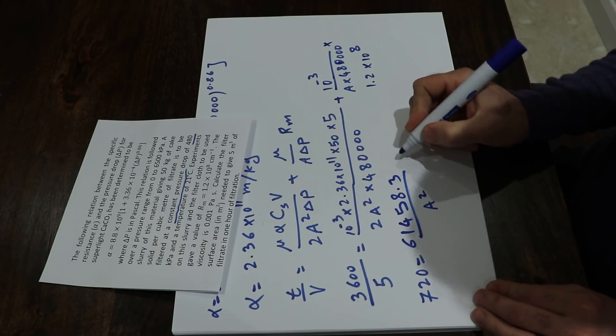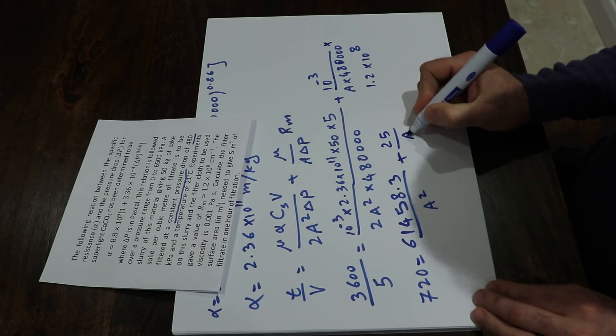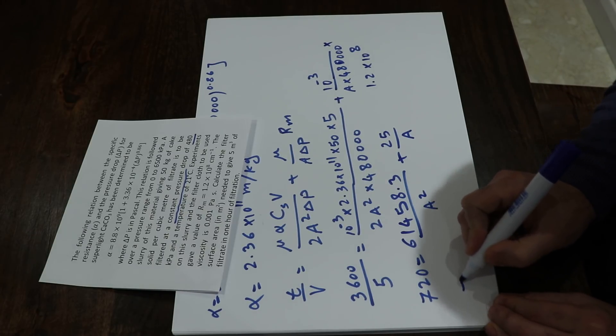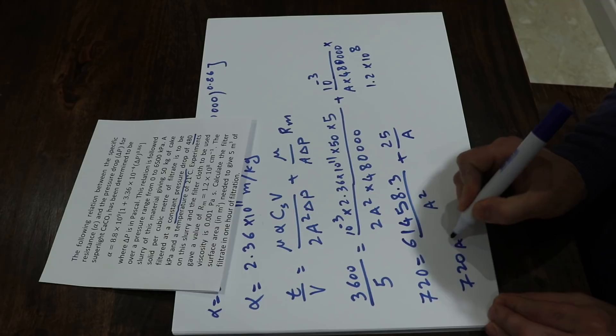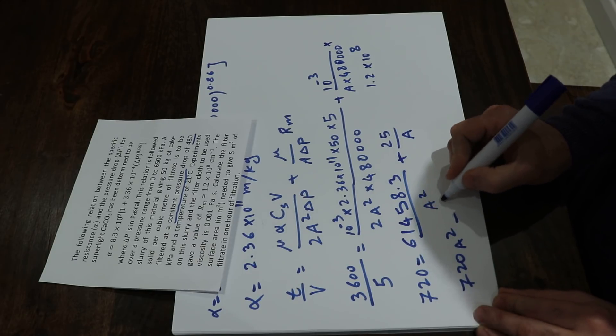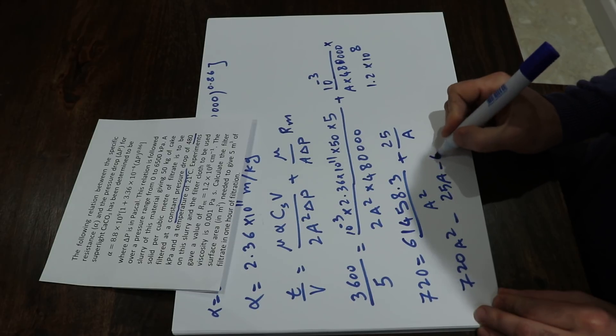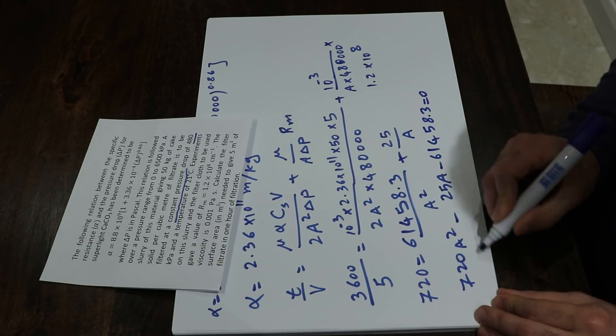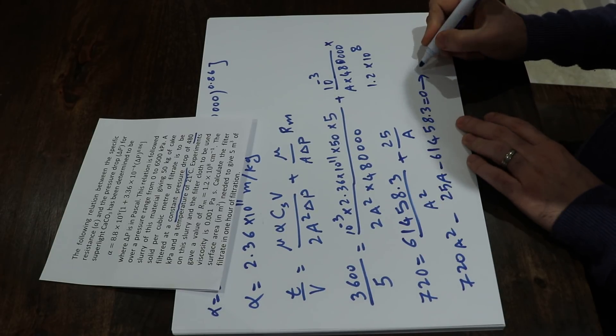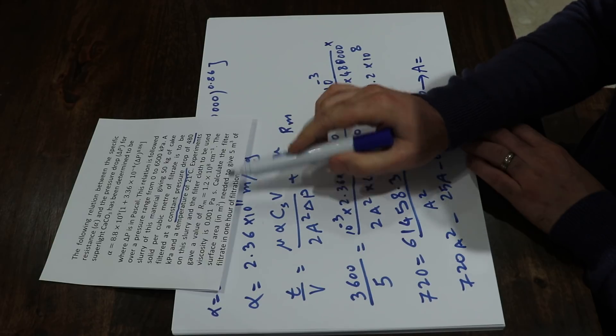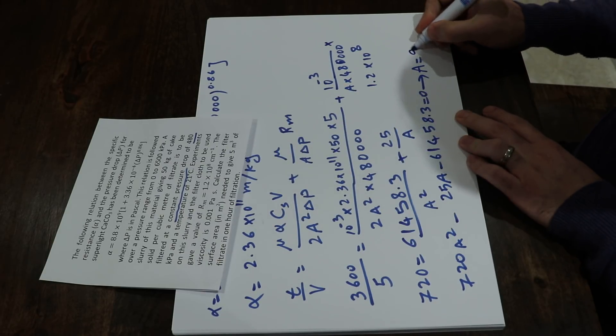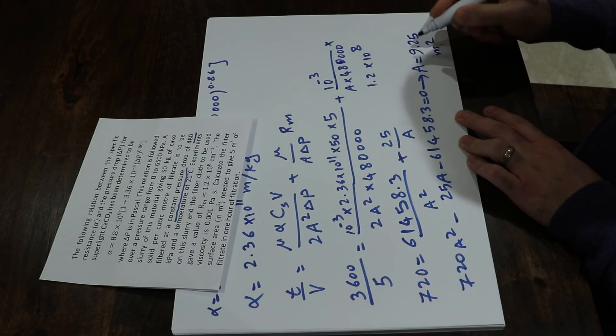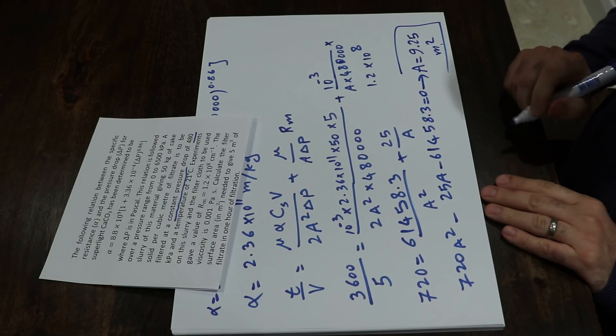And that will be equal to 720 A squared minus 25 A minus 61458.3 equals 0. If you solve this equation, A, the filter surface area, will be equal to 9.25 square meters. And that is the final answer.